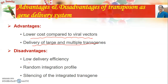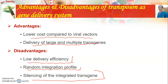Transposons have both advantages and disadvantages as gene delivery systems. One concern associated with their use as vectors is their potential to cause gene silencing. This completes the topic of transposons and concludes the lecture on cloning vectors.